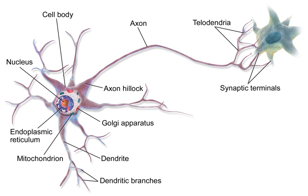Glutamate can cause excitotoxicity when blood flow to the brain is interrupted, resulting in brain damage. When blood flow is suppressed, glutamate is released from presynaptic neurons, causing greater NMDA and AMPA receptor activation than normal, leading to elevated Ca²⁺ and Na⁺ entering the postsynaptic neuron and cell damage. Glutamate is synthesized from the amino acid glutamine by the enzyme glutamate synthase.